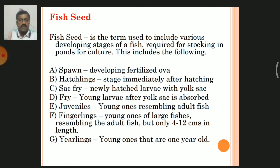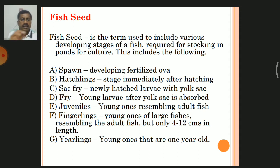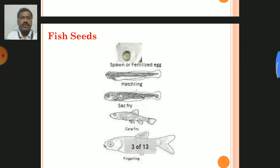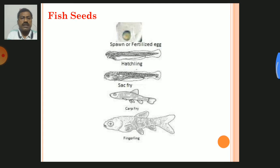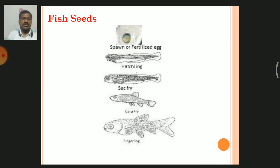These are the different developing stages of fish, and one of the developing stages is selected as fish seed, which is collected from different resources and cultured in ponds. To summarize, the developing stages are: spawn or fertilized eggs, hatchlings, sac fry, fry, and fingerlings.